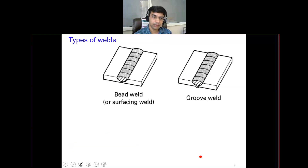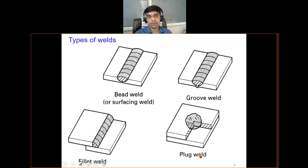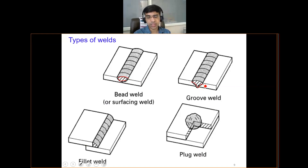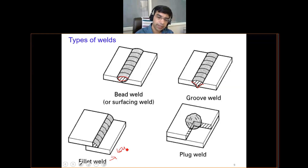In terms of different types of welds, bead welds are applied in the groove forming a bead shape. Groove welds have a groove instead of a gap. Fillet welds are used with the lap configuration. Plug welds are for a configuration in the middle of a plate.